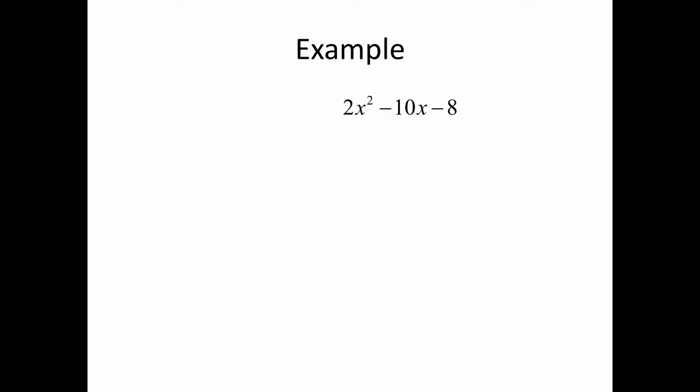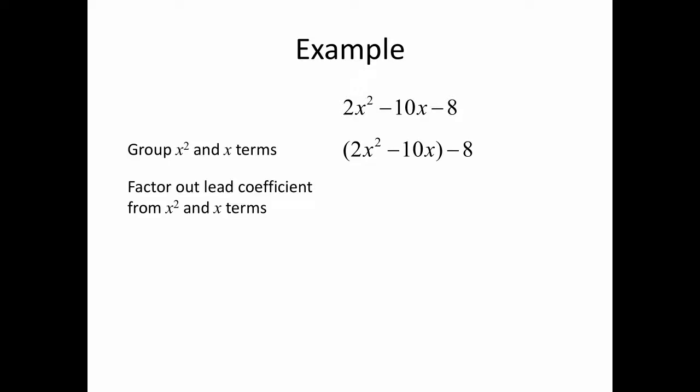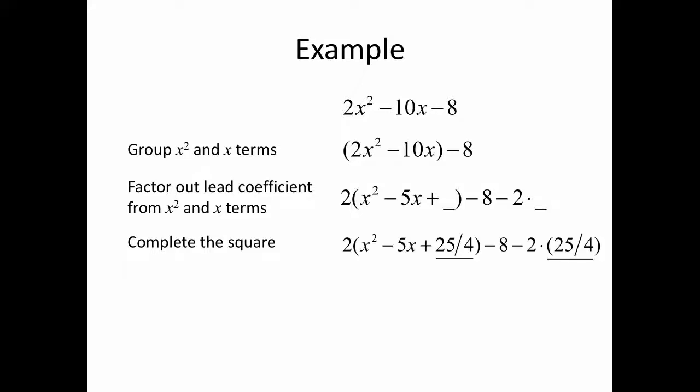Let's do another one with some negatives and a non-integer completion of the square — I'll have you work through this first. Stop the video and restart when you're ready to see the answer. We group the x and x-squared terms, factor out the lead coefficient, and find what completes the square: half of negative 5 is negative 2 and a half, squared is 6 and a quarter, or 25 fourths.